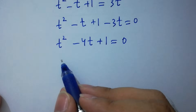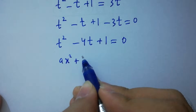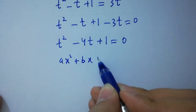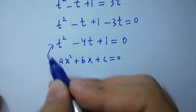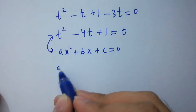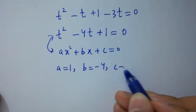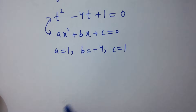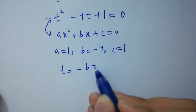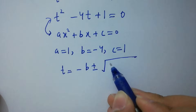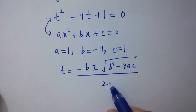This is a quadratic equation of the form ax squared plus bx plus c equals 0. By comparing, we have a equal to 1, b equal to minus 3, and c equal to 1. We apply the quadratic formula: t equals minus b plus or minus square root of b squared minus 4ac, over 2a.